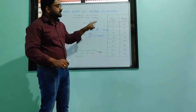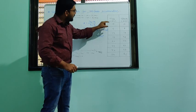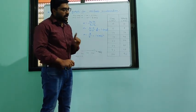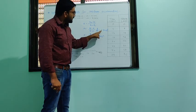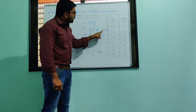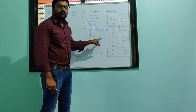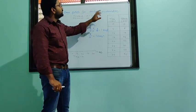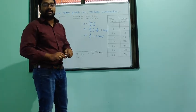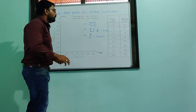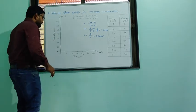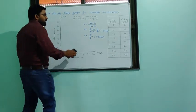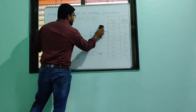Uniform acceleration: if you calculate acceleration between any two time intervals, you will find it is always 1.6 m/s². Its value remains constant — that is called uniform acceleration. Now we have to draw this uniform acceleration using a velocity-time graph.